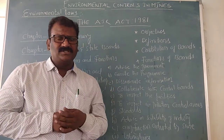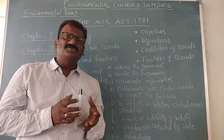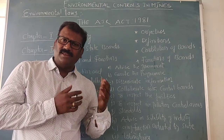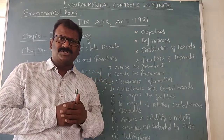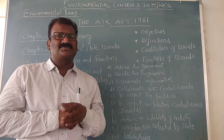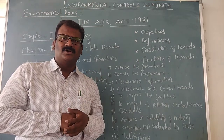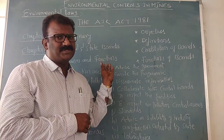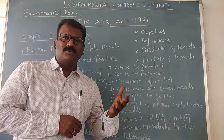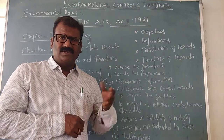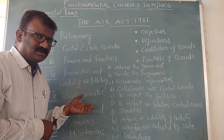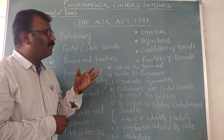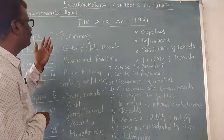As per the Act, 'air pollutant' means any concentration of gases or pollutants in the air, including noise, at concentrations that affect the human environment as well as other living creatures. Where the concentration is more than the standard, it is called air pollution. All definitions — including 'occupier' and 'industry' — are covered in the first chapter of the preliminaries.